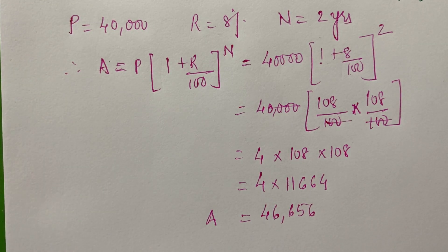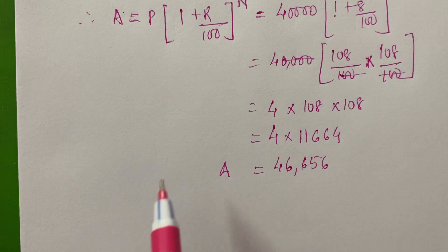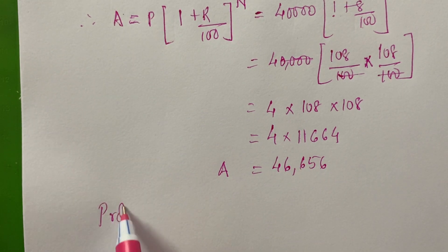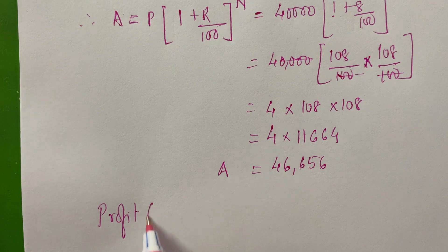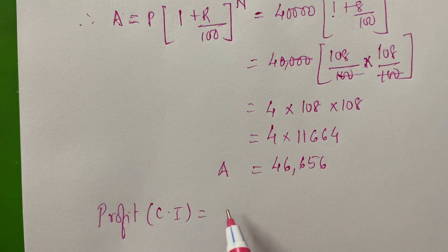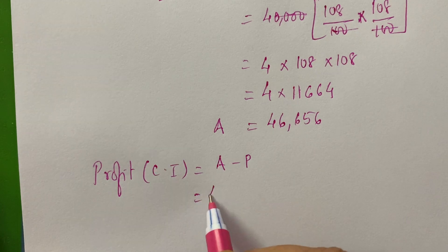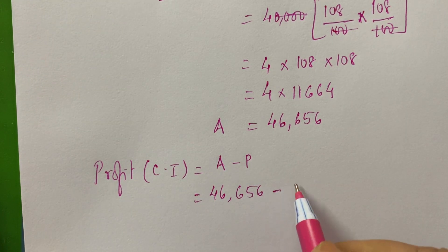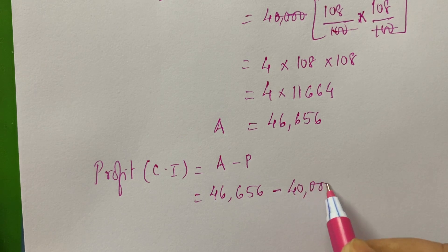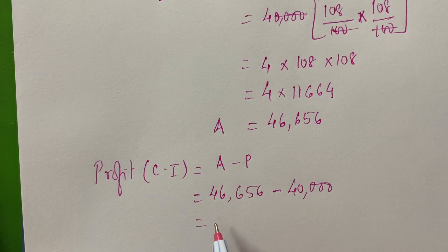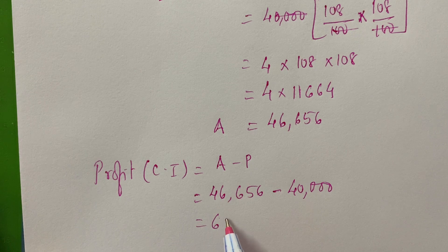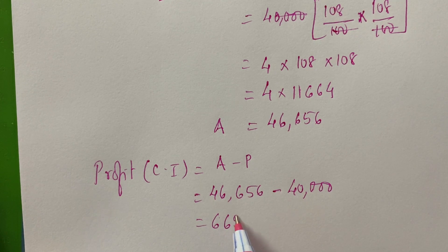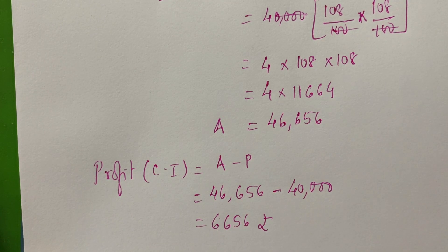This is the amount earned by Mr. Syed. So, how much will be the profit earned? So, the profit, that is compound interest, will be amount minus the principal. Amount is 46,656 minus 40,000. This is the principal. So, the profit earned is 6,656 rupees.